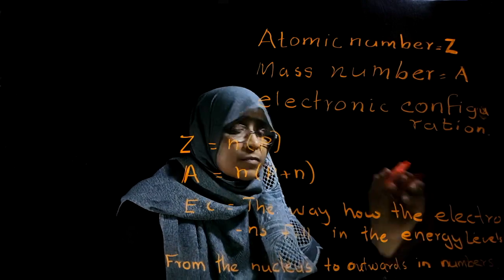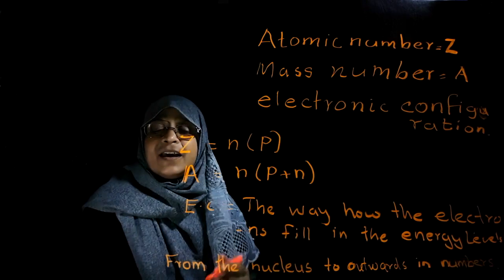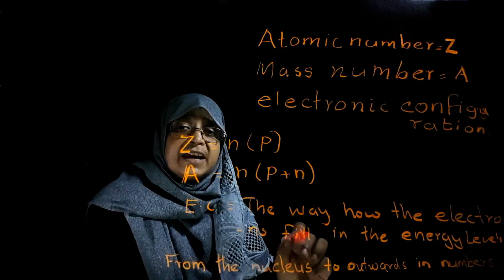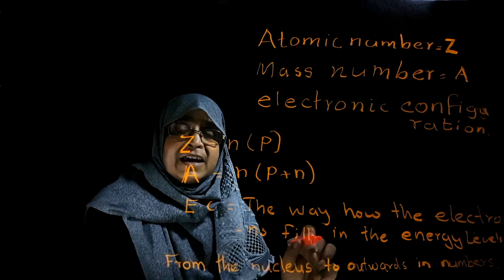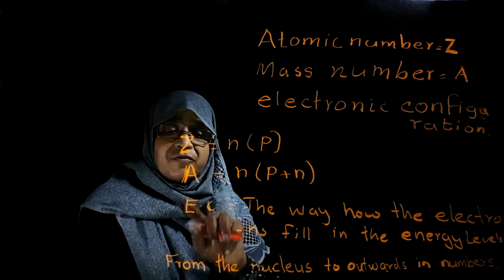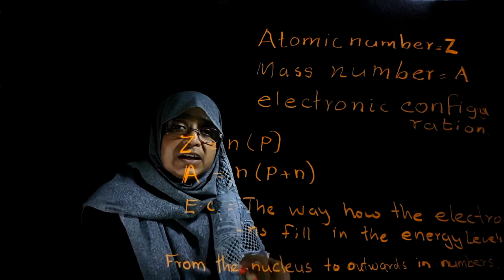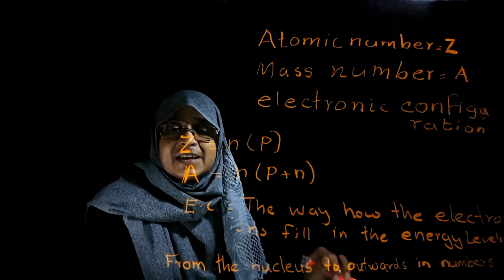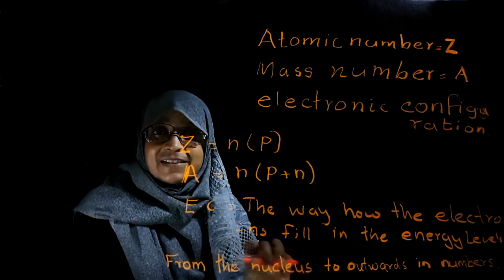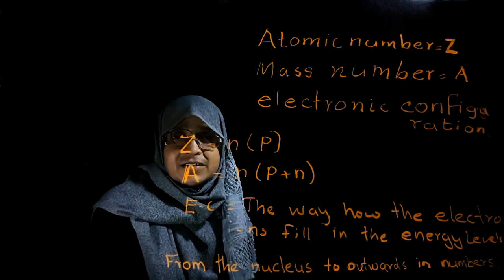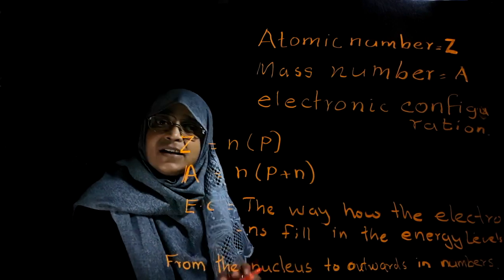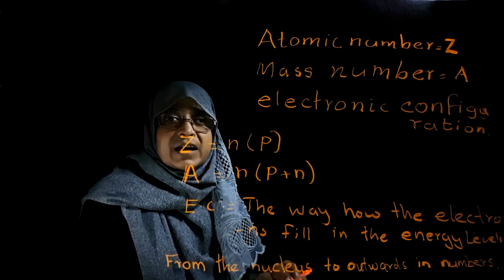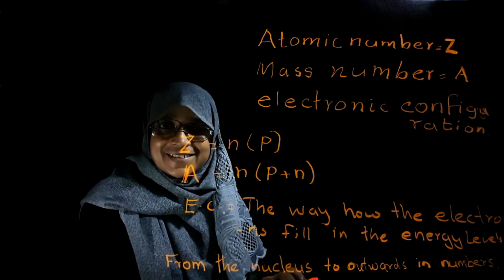Electronic configuration is the way how the electrons fill in the energy levels from the nucleus outward. This arrangement expressed in numbers is known as electronic configuration. To understand this term further, we will do some examples.